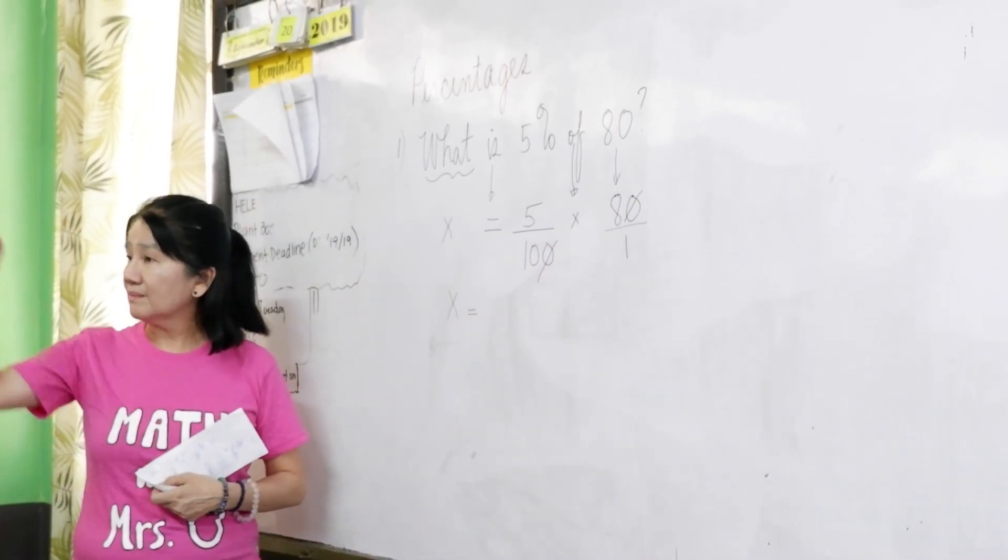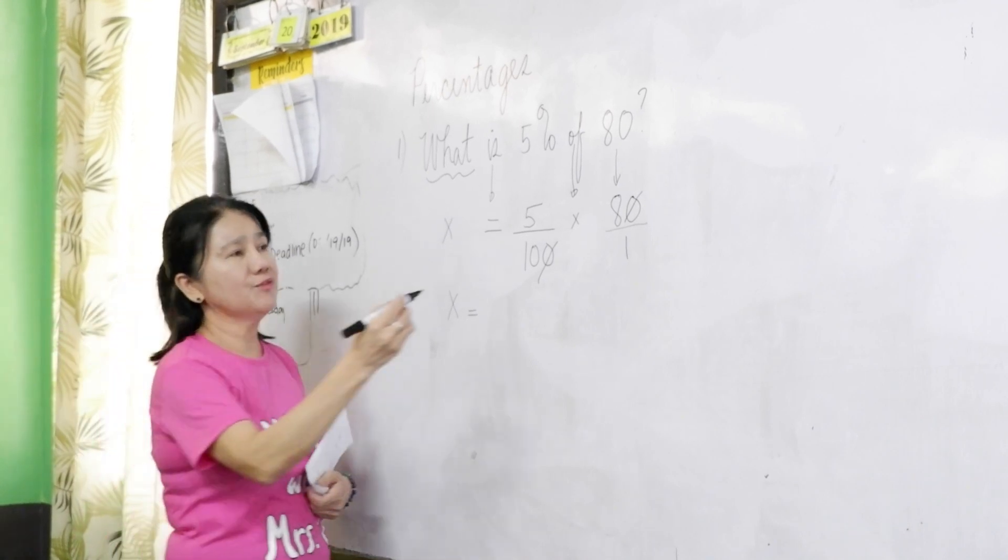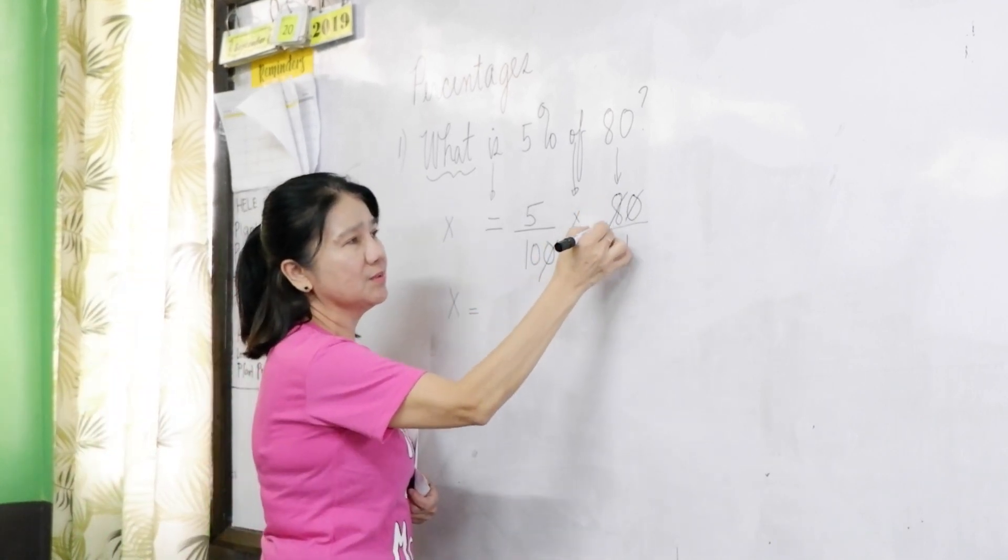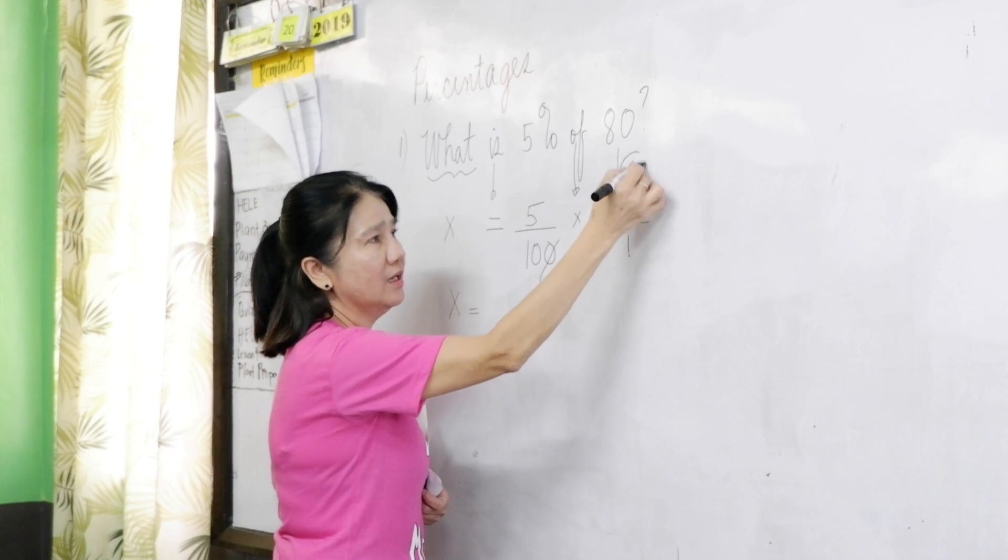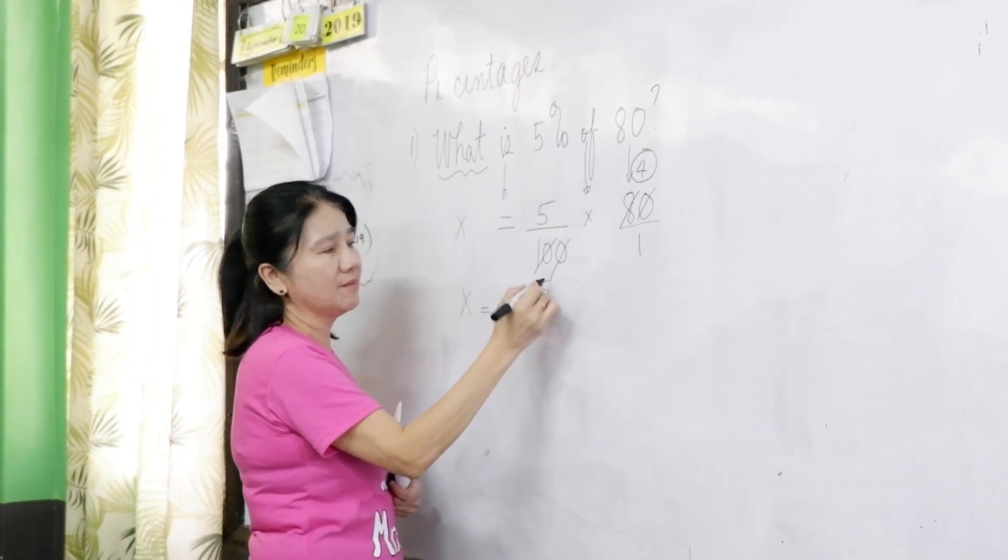And then 8 and 10. Can we simplify 8 and 10? 4 and 5. Yes, 4 and 5. 8 is divisible by 2, so you get 4. 10 is divisible by 2, so you get 5.